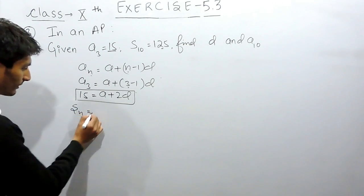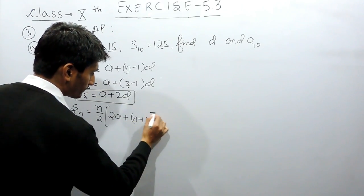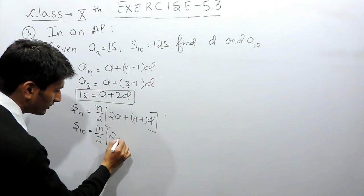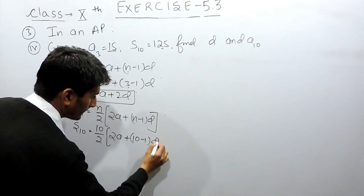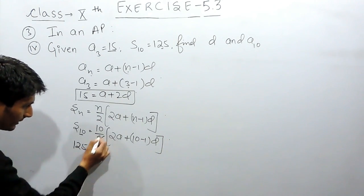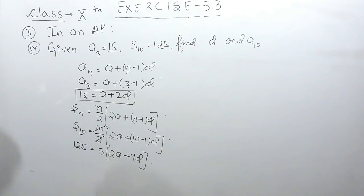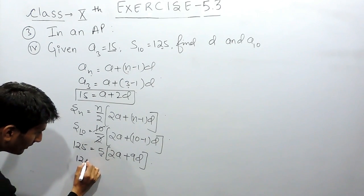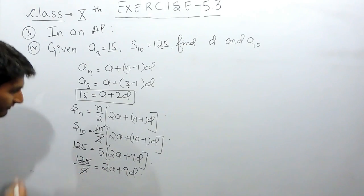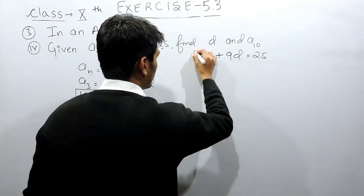The sum of the first 10 terms is given as 125. The formula for the sum of n terms is Sn = n/2 × (2a + (n-1)d). Substituting n=10 and S10=125, we get 125 = (10/2)(2a + 9d), which simplifies to 2a + 9d = 25. This is our second equation.